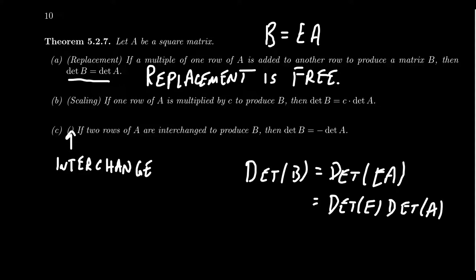If we're doing a replacement row operation, the elementary matrix E is going to be either an upper or lower unit triangular matrix — ones along the diagonals, zeros on one side, and a single non-zero entry on the other side. Since replacement matrices are triangular, their determinant is the product of the diagonals, and since they're unit triangular, the determinant equals one. That's why replacement has no effect: det(B) = 1 × det(A).